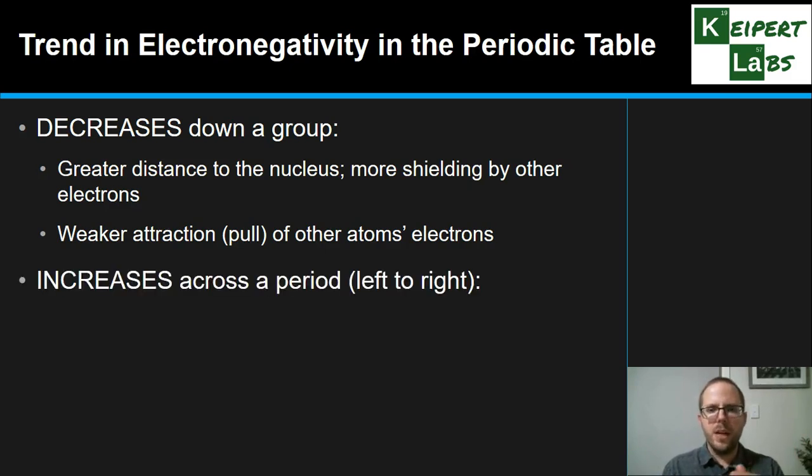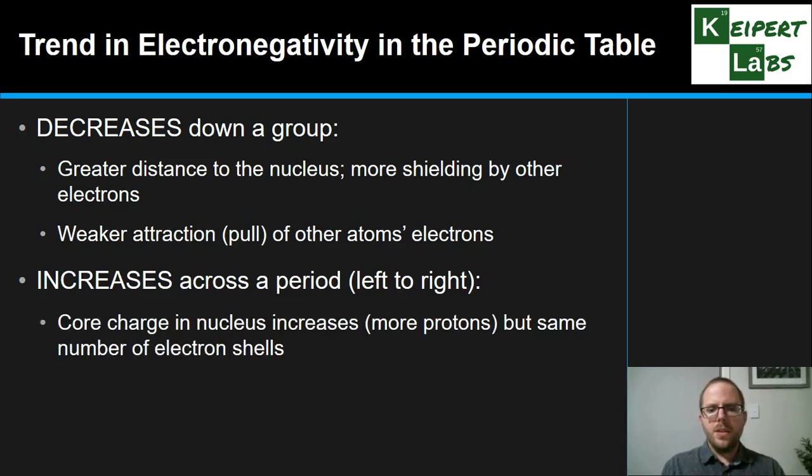But as we go across a period, we notice it increases as we go left to right. What we're saying is that this thing we call the core charge, the amount of positive charge inside the nucleus, increases because our atomic number is going up by one across the row. So we've got more protons in the nucleus, but the same number of electron shells. We looked at this as related to atomic radius, that the atom pulls in smaller and tighter because of the attraction of the nucleus to its outside electrons. We have a bigger positive charge and less of that buffering blocking effect happening. Other electrons of other atoms end up being pulled more strongly and more closely to that atom, so we end up with stronger attraction to other atoms' electrons, therefore a higher electronegativity.